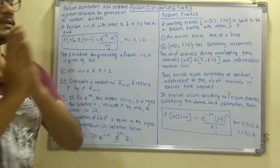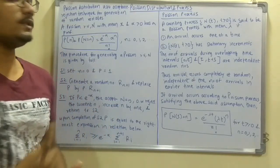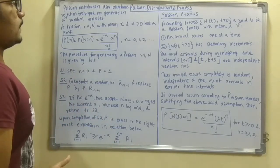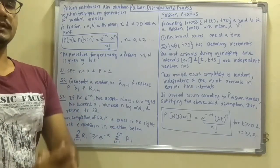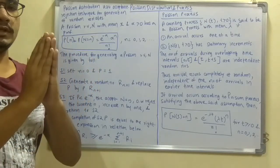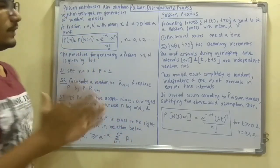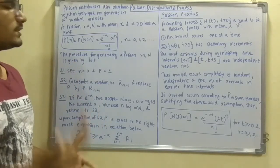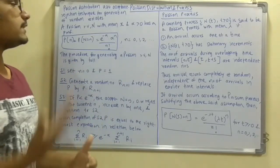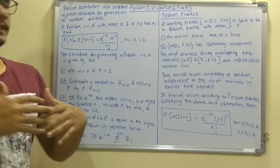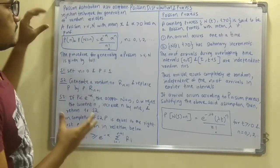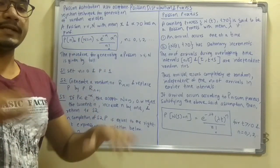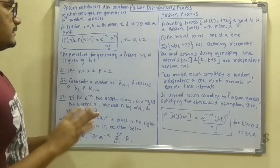First of all, what is the Poisson distribution, and following that, how is the Poisson process actually constructed? The full name given to this is: Poisson Distribution Using Acceptance-Rejection Technique for Generation of Random Variates — not just Poisson distribution, but that entire name.